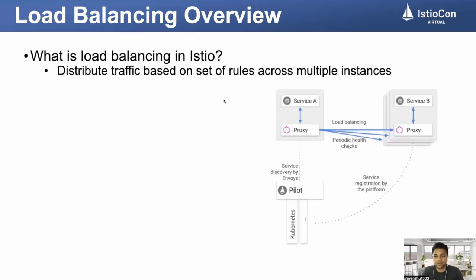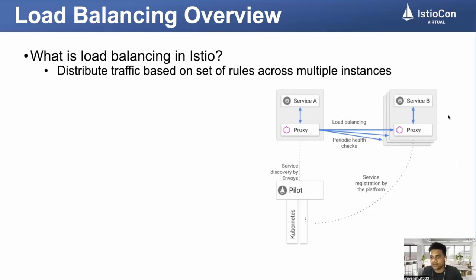So what exactly is load balancing? In simpler terms, if I have a service A which contains a sidecar proxy, and service B which also has a sidecar proxy with multiple instances, then whatever traffic is coming from instance A needs to be load balanced between different instances of service B. The flexibility to define some set of rules is what we call a load balancing algorithm. We'll discuss what are the out-of-the-box load balancing settings that can be configured in Istio.